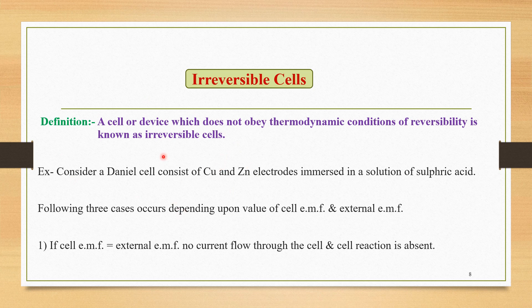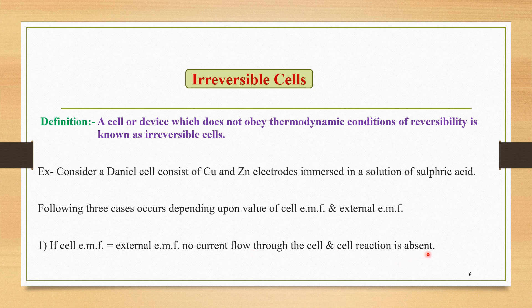To understand this concept clearly, consider a Daniel cell consisting of copper and zinc electrodes immersed in a solution of sulfuric acid. Again the cell is a Daniel cell, but now we change the salt solution to sulfuric acid. Again three cases occur depending upon the value of cell EMF and external EMF. The first case is: if cell EMF equals external EMF, no current flows and cell reaction is absent.